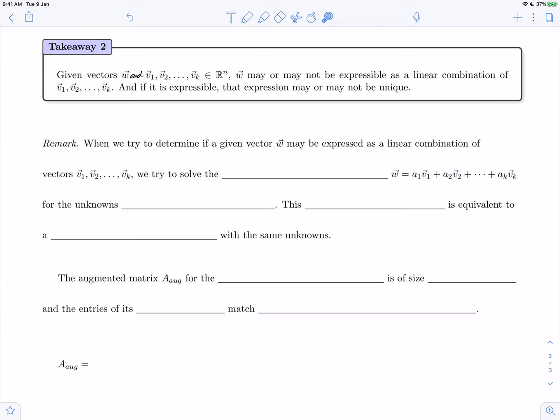In the previous two videos, we saw situations where we were not able to express a given vector w in terms of a linear combination of other vectors, and situations where we were able to do so either uniquely or in infinitely many ways. And so that is the takeaway number two here: given w and vectors v1 through vk in Rn, w may or may not be expressible as a linear combination of the vectors, and if it is, that expression may or may not be unique.